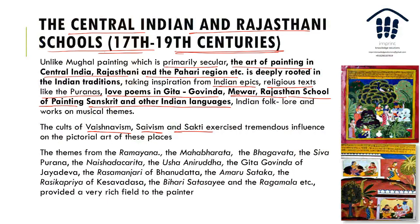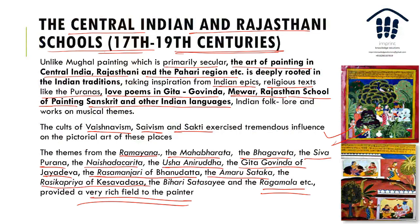Themes of Krishna and his gopis are very prevalent. Other themes include the Ramayana, the Mahabharata, the Bhagavata, the Shiva Purana, the Naishadhiya Charita, the Usha Niruddha, the Gita Govinda of Jayadeva, the Rasamanjari of Bhanudatta, the Amarushataka, the Rasikapriya of Keshavadasa, the Bihari Satsai, and the Ragamala — all of which provided a very rich field to these paintings.